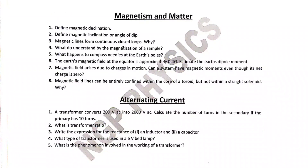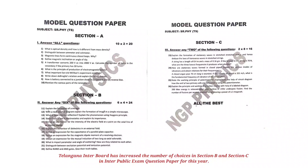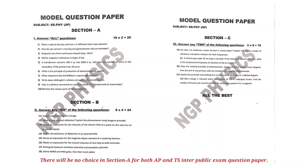This time, Telangana Inter Board has increased choice questions in Section B (4-marks questions) and Section C (8-marks questions). AP Inter Board, however, is continuing with the old pattern question paper. In Section A, very short answer type 2-marks questions have no choice for both AP and Telangana — 10 questions, 10 must be answered.